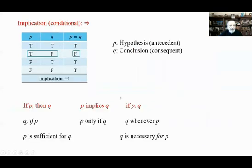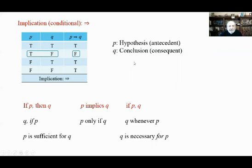Here is implication, also called conditional. The key rule is: we do not allow truth to imply false — that case is false. Everything else is true: true implies true is true, false implies true is true, false implies false is true. The only false case is true implies false. P is called the hypothesis or antecedent, and Q is the conclusion or consequent.